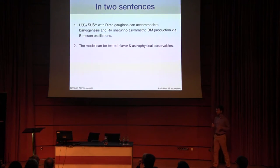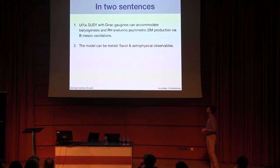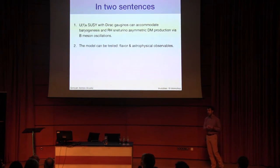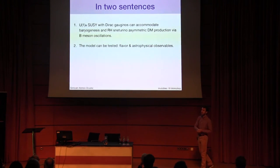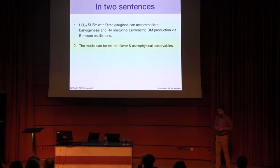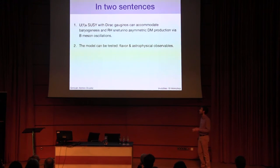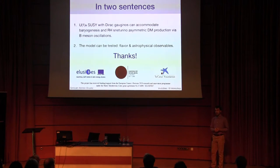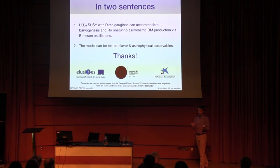So, with this I come to my conclusions. I've been discussing how, in this supersymmetric framework, baryogenesis and asymmetric right-handed neutrino dark matter can be produced through B meson oscillations. I think what's most appealing about this scenario is that it's very testable, particularly with flavor astrophysical observables. That's all I wanted to say, so if you have any questions I'll be happy to discuss with you.